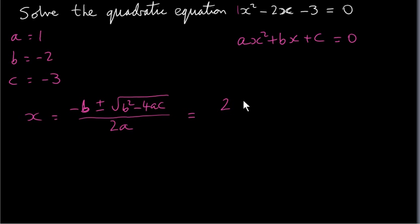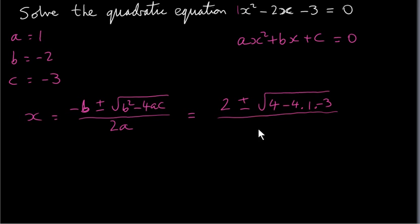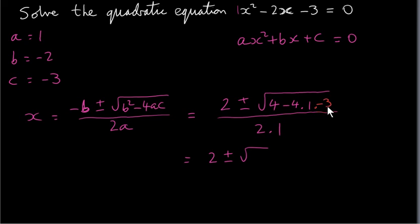So we have minus b — minus minus 2 is plus 2 — plus or minus the square root of b squared, which is minus 2 squared, is 4, minus 4 times a, which is 1, times c, which is minus 3, all divided by 2 times 1. Minus 4 by 1 is minus 4, by minus 3 is plus 12. So we get 4 plus 12, which is 16.